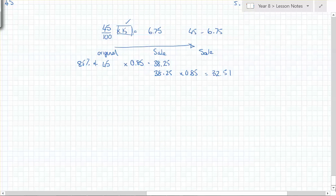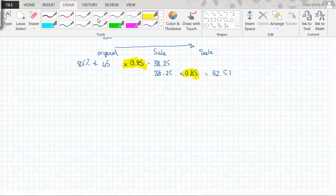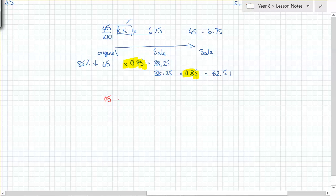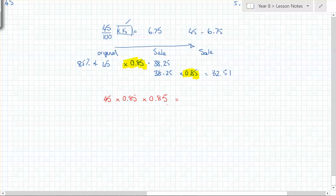The reason this is quicker: a 15% reduction is the same as finding 85%. So we've done 45 times 0.85, then times 0.85 again — that's like doing 45 times 0.85 times 0.85 in one go on the calculator. Try it: you get 32.51 straight away.